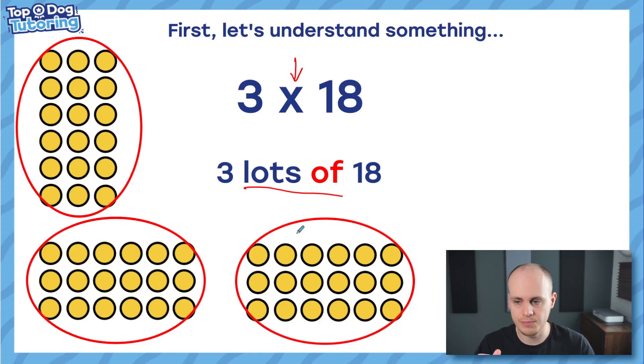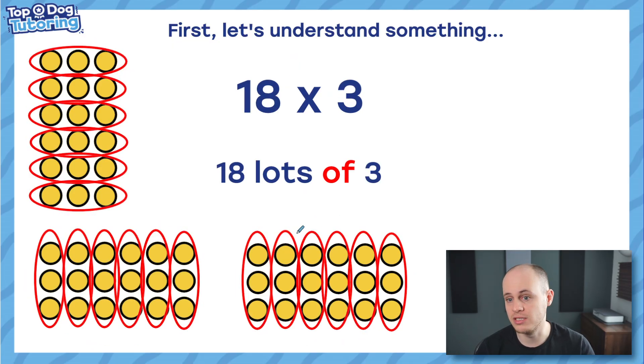And let's just remind ourselves that multiplication is commutative. And that means we can switch the numbers around. Three lots of 18 does give the same answer as 18 lots of three, as you can see from my visual. So first of all, we need to understand that.